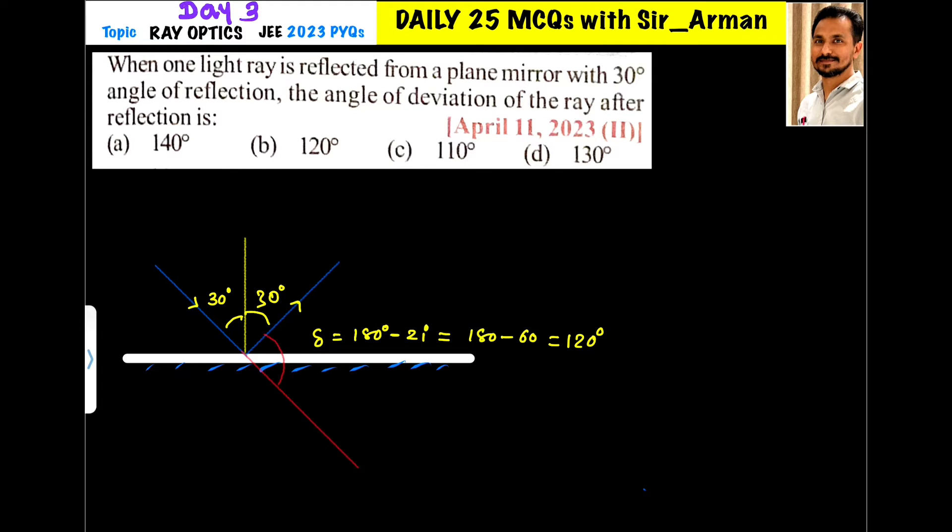When a light ray is reflected from a plane mirror with 30 degree angle of reflection, the angle of deviation of the ray after the reflection is... We have a shortcut equation for deviation. We can directly write 180 minus...